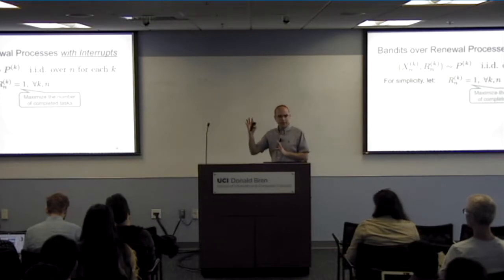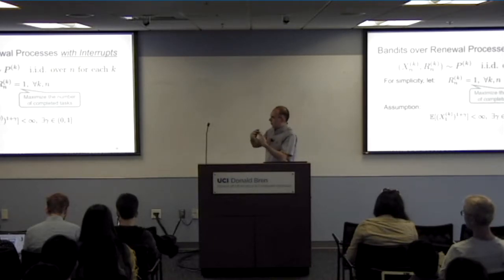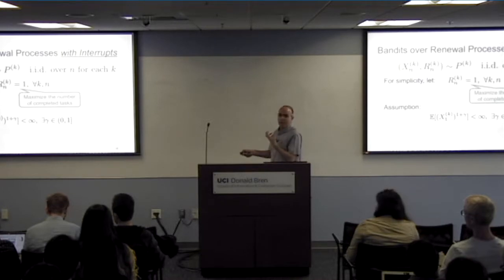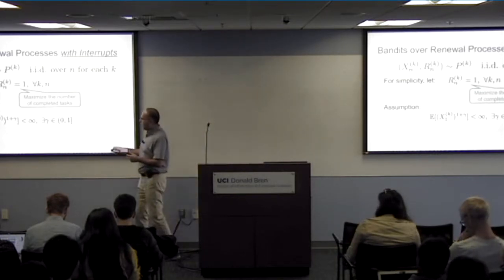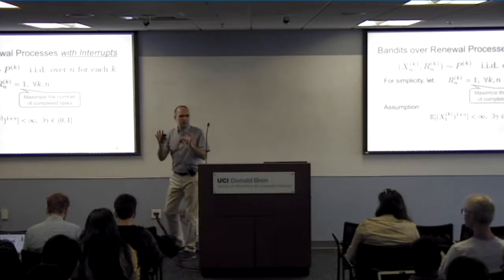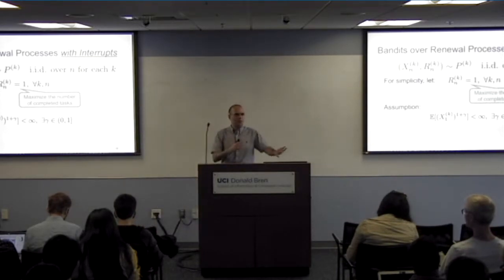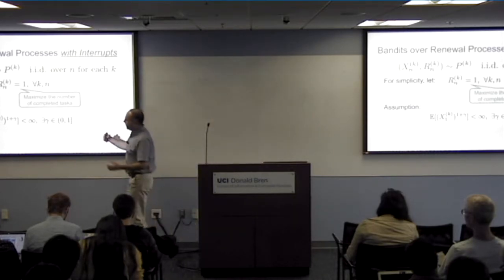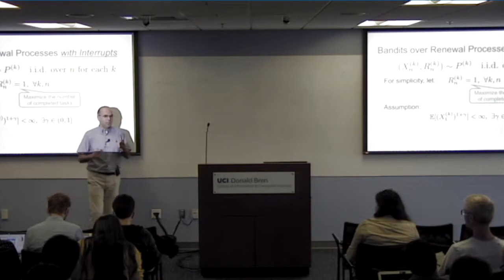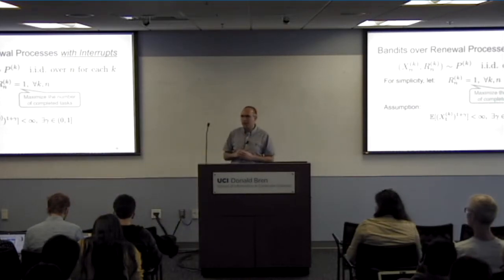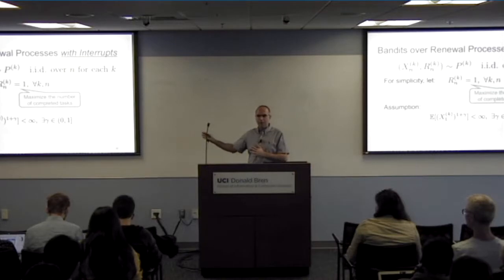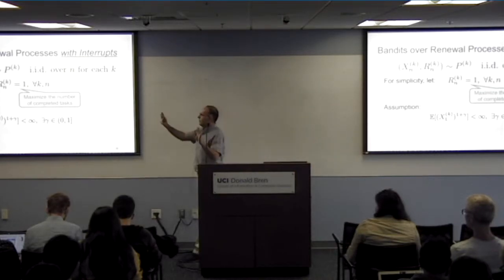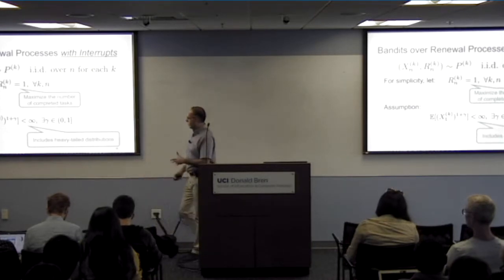It's trying to maximize the number of completed tasks in the time you have. This assumption concerns the inter-renewal times — the service time of a process — and is a very weak assumption saying that the mean of X to the power of (1 + gamma) exists, where gamma can be as low as any number close to zero. Essentially, I want this completion time to have a finite mean and a slightly higher moment than that. It allows infinite variance random times — second moment is not bounded here. So it could have very heavy-tailed distributions. This is what allows us to accommodate heavy-tailed distributions.